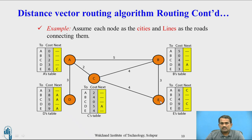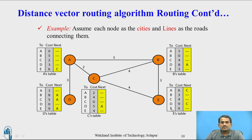For node E: E to A, via C, cost is 6 — 4 plus 2 total 6. E to B, cost is 3. E to C, cost is 4. E to D, cost is 9. E to E is 0. For node C: C to A is 2, C to B is 4, C to C is 0, C to D via A is 5 — 2 plus 3. C to E is 4.